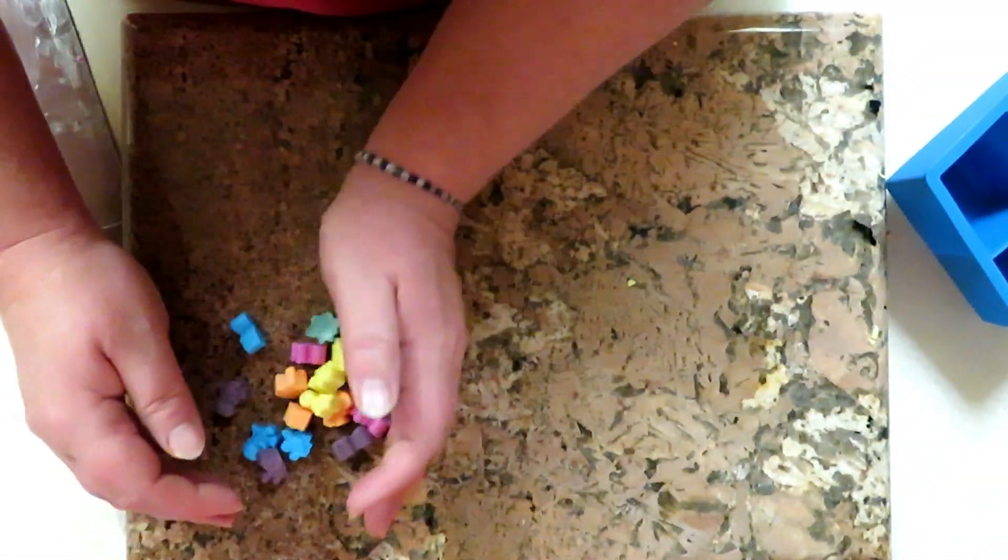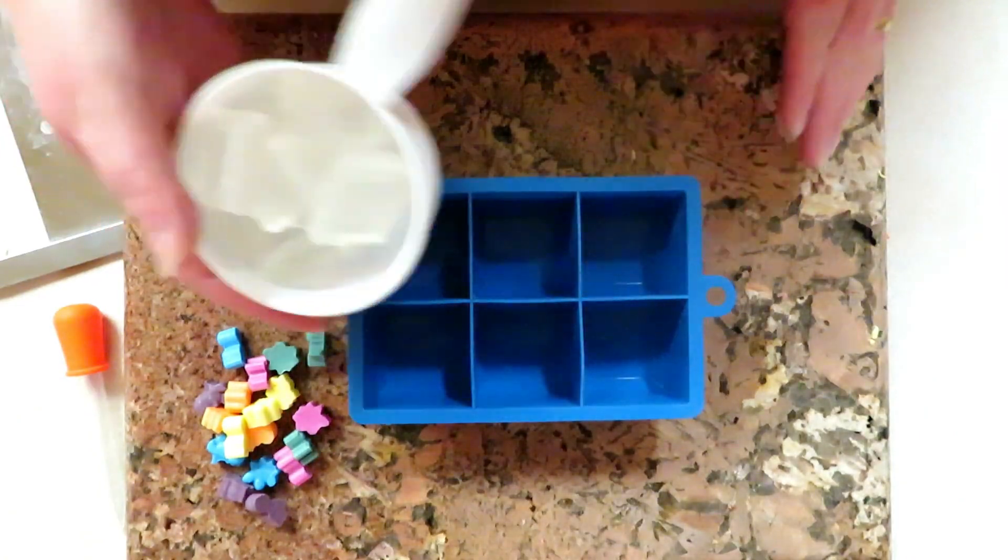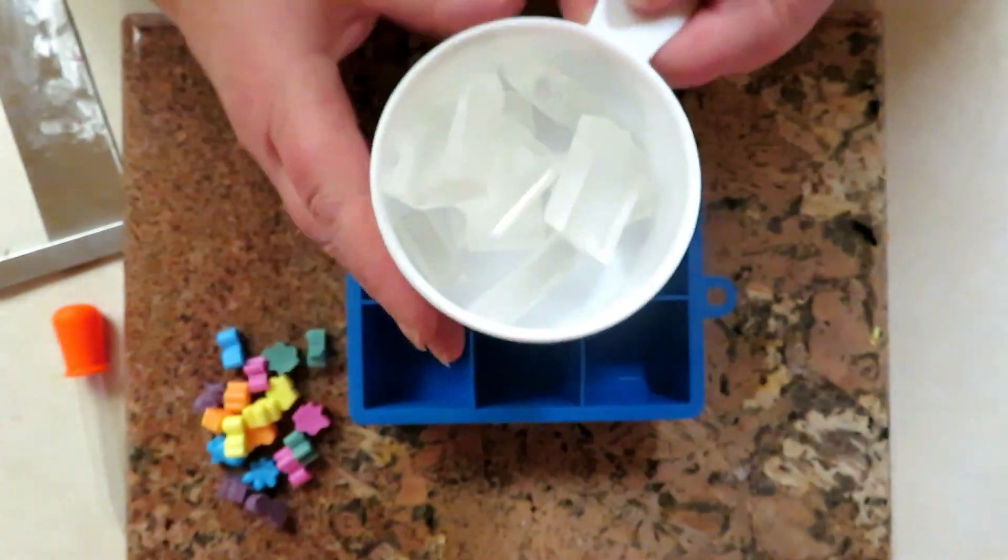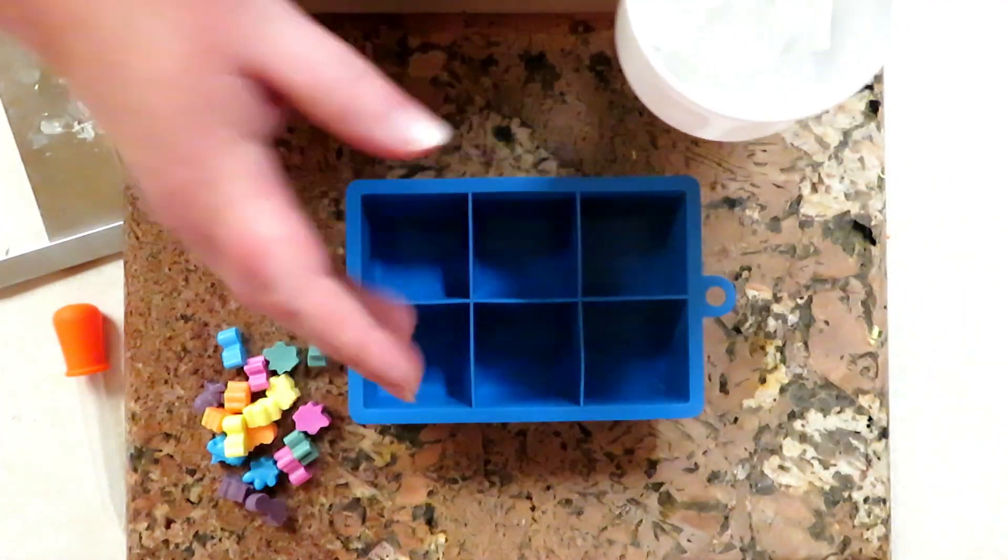Okay, got them all popped out. Now we're just gonna set these over to the side. Now I got my mold here, I got my clear soap, I'm gonna melt this down, I'm gonna add a little fragrance to it but I'm gonna leave it clear and show you how I'm gonna do this.